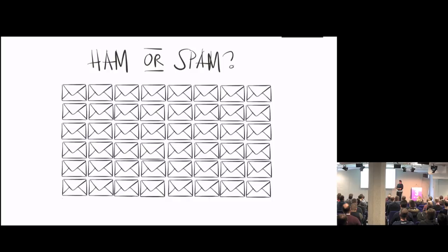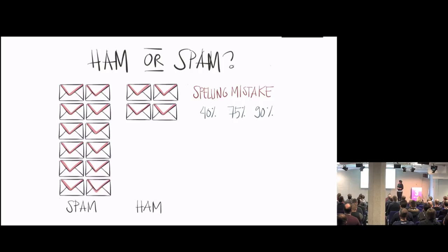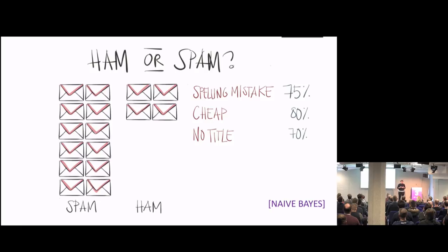Another algorithm is naive Bayes. Here we have a bunch of emails — some spam, some not spam. The red ones have spelling mistakes. If an email has a spelling mistake, what's the probability it's spam? It's 75%. Then you look at other features: does it contain the word 'sheep'? Does it have a title? Is it from a certain country? Is it sent to many people? You calculate all these together, get a probability, and use that probability to classify it as spam or not spam.